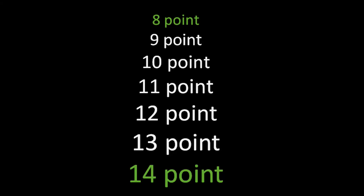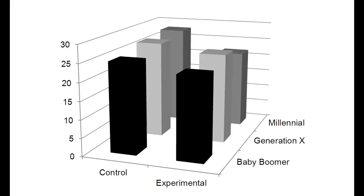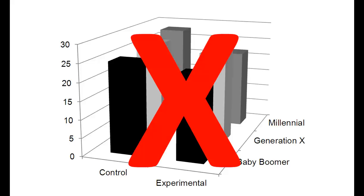To be readable, letters should be no smaller than 8 points and no larger than 14 points. Also, authors should avoid three-dimensional charts. As shown here, 3D charts can be hard to read, and they often do not enhance the presentation of your data.